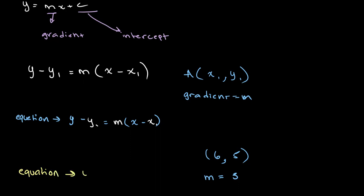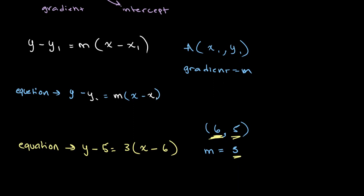So we get y minus 5 equals 3 multiplied by x minus 6. Expanding this, we get y equals 3x minus 18 plus 5, then we get y equals 3x minus 13.